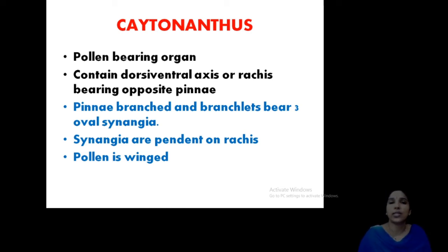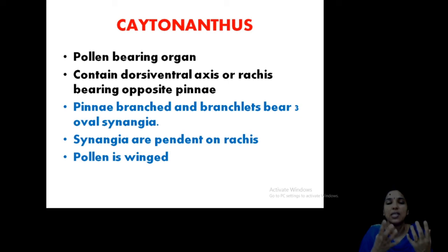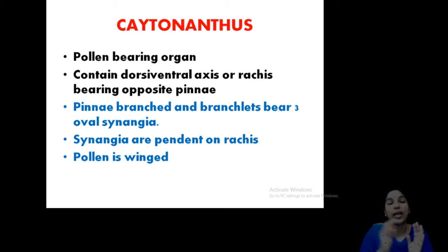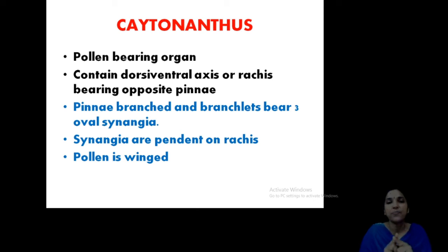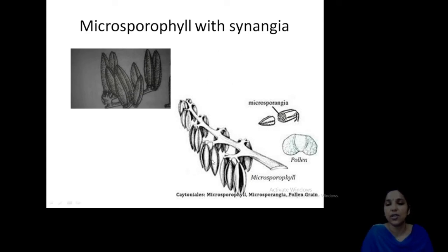Now moving on to Chitonanthus — the male reproductive part or pollen-bearing organ. It contains a rachis bearing opposite pinnae. The pinnae are branched and the branchlets bear synangia — a group of microsporangia. They are pendant on the rachis, drooping from it. Pollen grains are winged, a feature that can be compared with conifers. In the image you can see the microsporophyll with the synangia — the drooping structures on the rachis — on which the synangia are observed.